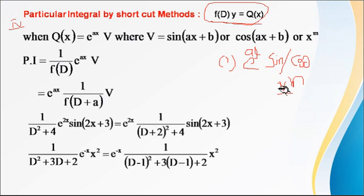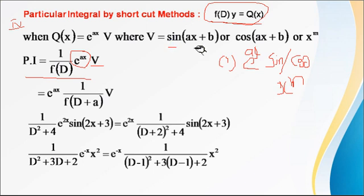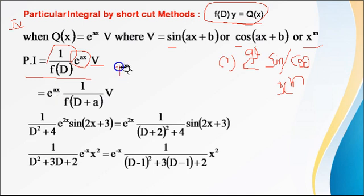Now this fourth method handles e^(ax) · v, where v equals either sin, cos, or x^m. So PI = 1/f(D) · e^(ax) · v. Write down e^(ax) to the side and replace D with D+a, where a is the coefficient of x in the exponential function. After replacing D with D+a, we continue with either the second or third shortcut method.